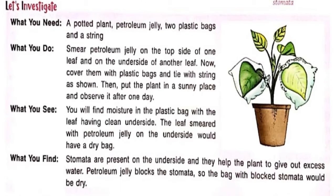Let us do some activity. Take a potted plant, petroleum jelly, two plastic bags, and a string. Apply petroleum jelly on the top side of one leaf and on the underside of another leaf. Cover them both with plastic bags and tie with string, as shown in this picture. Then put the plant in a sunny place and observe it after one day. You will find moisture in the plastic bag with the leaf having a clean underside, while the leaf with petroleum jelly on the underside will have a dry bag. This shows that stomata are present on the underside and help the plant to release excess water. Petroleum jelly blocks the stomata, so the bag with blocked stomata would be dry.